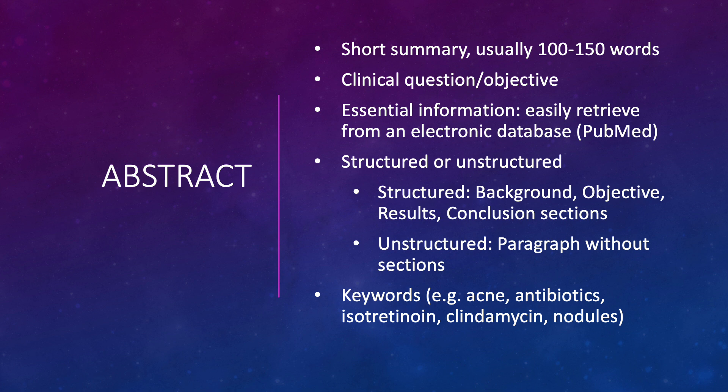The journal may require the abstract to be structured with the same sections as the overall review manuscript — like background, objective, and results — or it can be unstructured, just a short paragraph that summarizes. They may also ask for keywords, which helps people search for topics through databases like PubMed.